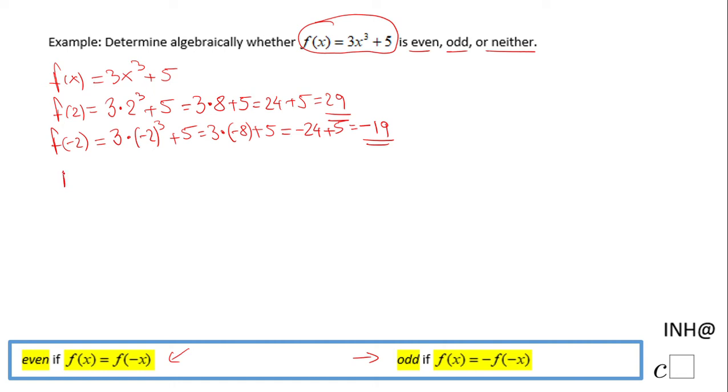Looking at these two, 29 and -19, we notice that f(2) ≠ f(-2), so it doesn't satisfy the even function statement. Also, f(2) ≠ -f(-2), so it's not odd. This function is neither even nor odd.